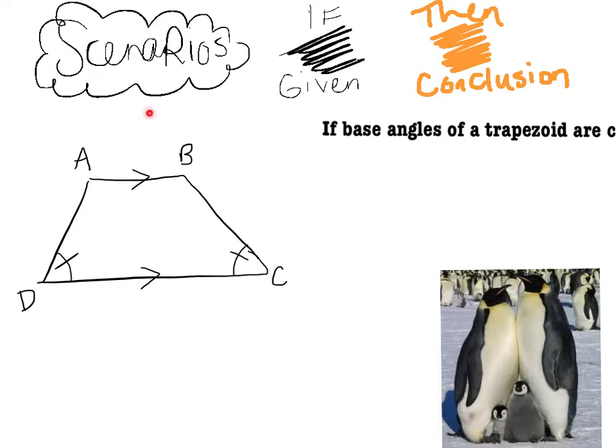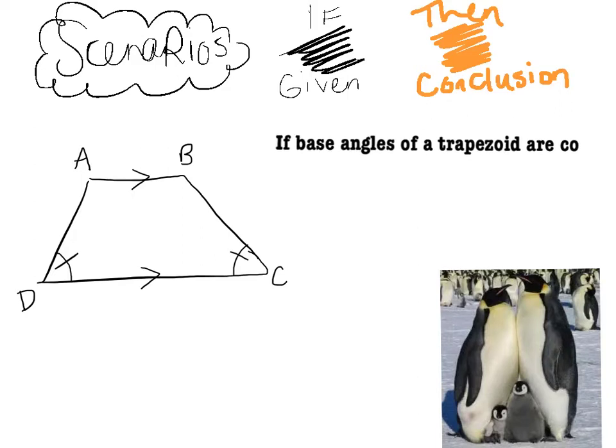First I'd like you to draw this trapezoid labeled ABCD. I know it's a trapezoid because only one pair of parallel sides are marked and the given information is that the base angles are congruent. So if the base angles are congruent as we labeled here then what can we say?